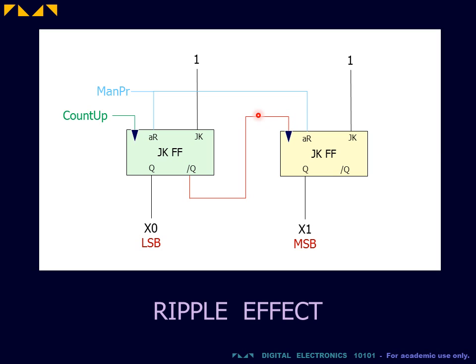the flip-flop on the right must wait for the full operation of the flip-flop on the left before it begins its own operation. This is called a ripple effect. For this reason, the asynchronous counter is also called the ripple counter.